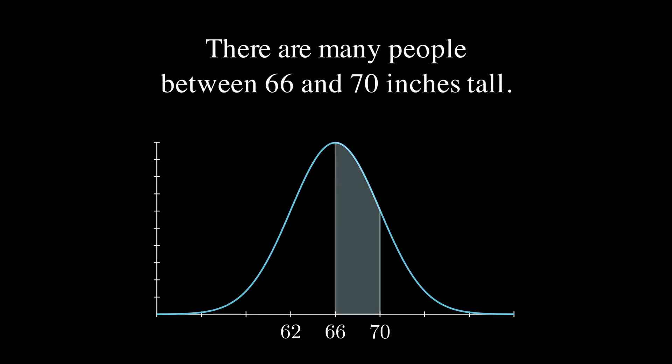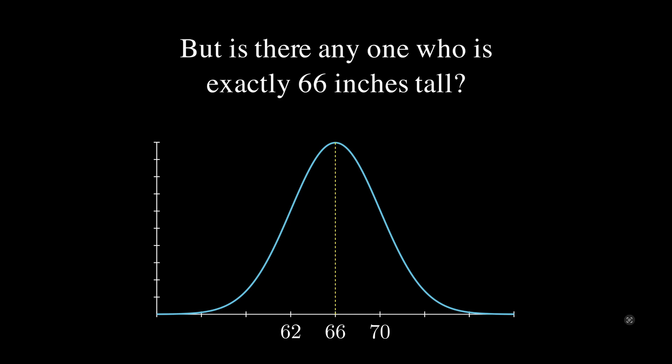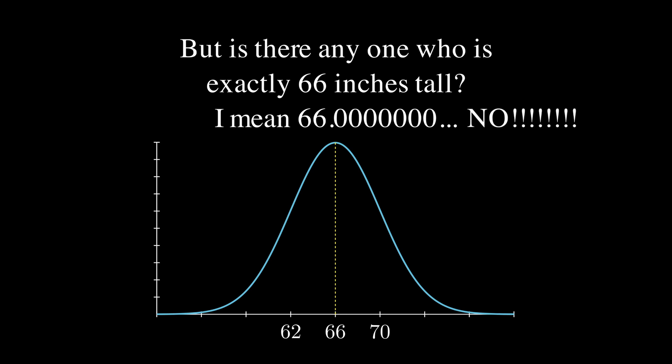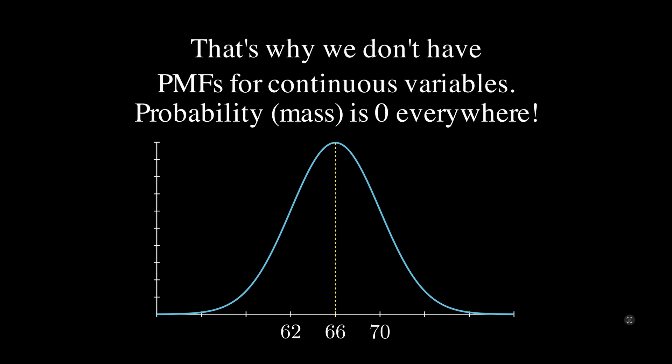This is similar to how continuous random variables work. There are many people between 66 and 70 inches tall, and even many people between 66 and 67 inches tall. But is there anyone in the world who is exactly 66.0000... going on forever to infinitely many decimal places? No. Zero-dimensional points of a rock have no mass, and likewise, exact outcomes in continuous distributions have probability zero. That doesn't mean it can't happen — it just means it's exceedingly unlikely. That's why we don't have PMFs for continuous random variables — probability, or mass, is zero everywhere.